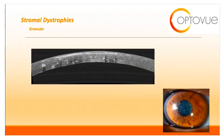Let's switch over to the corneal stromal dystrophies. The first is granular dystrophy. Granular dystrophy appears as white anterior stromal opacities in the central cornea, separated by clear intervening spaces, with the corneal periphery spared. OCT will show hyper-reflective spots in the corneal stroma, Bowman's, and epithelium, and can lead to a partial disruption in Bowman's.